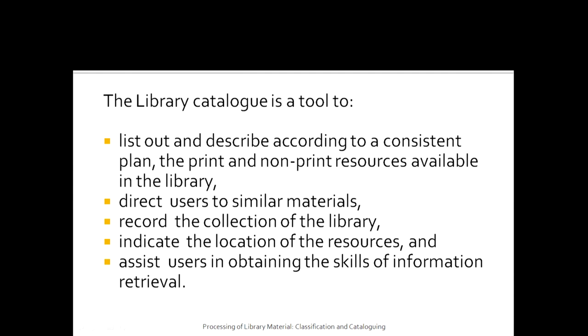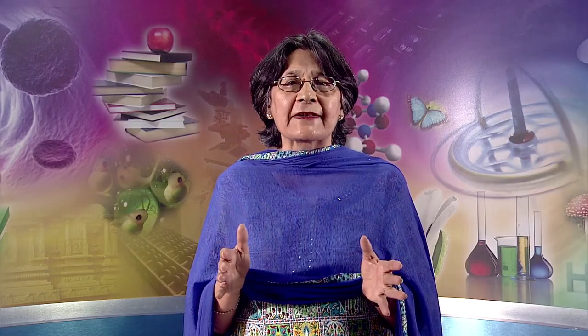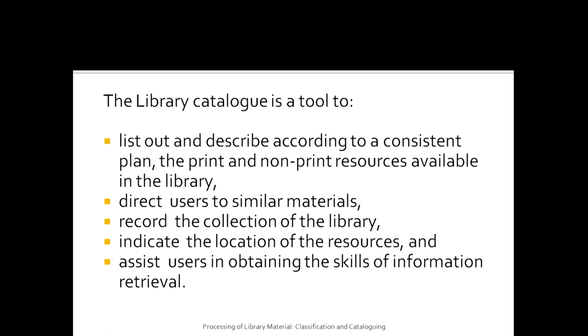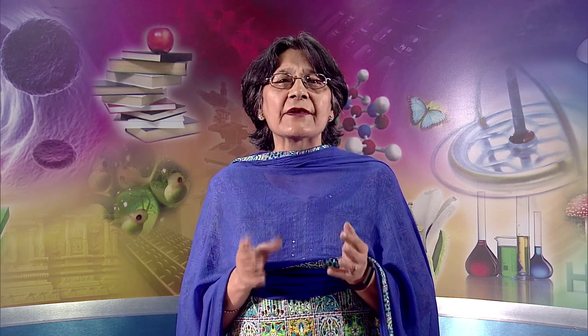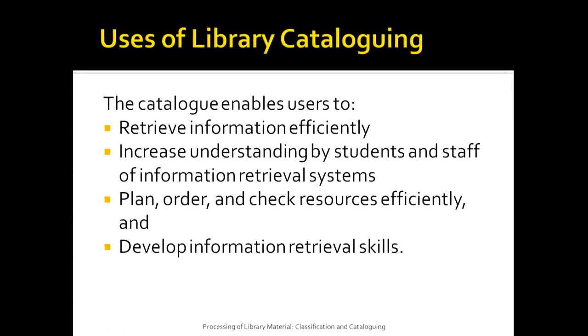The library catalog records the collection of the library and indicates the location of resources — when we look at the library catalogue, it tells us which document can be found at which class number. It also assists users in obtaining the skills of information retrieval. The uses of library cataloguing include enabling users to retrieve information efficiently, increasing understanding of information retrieval systems, helping to plan, order and check resources efficiently, and developing information retrieval skills.